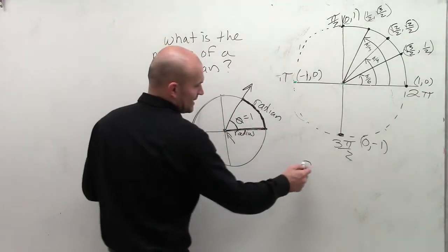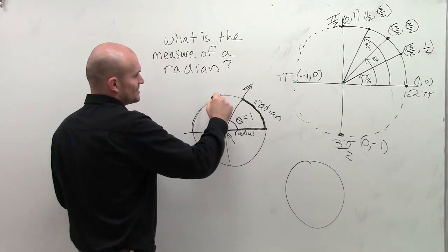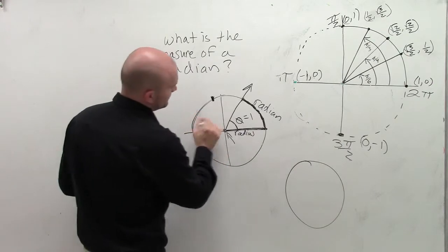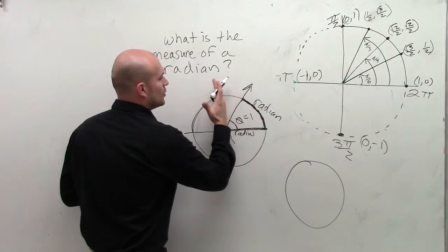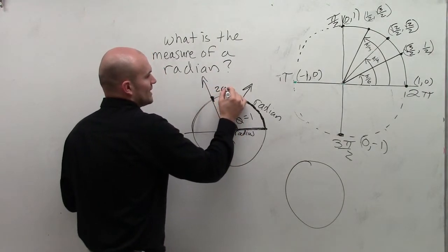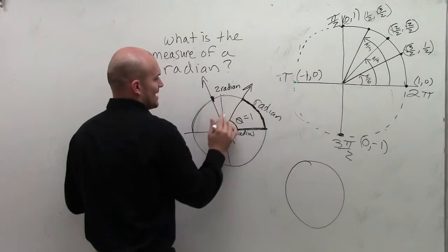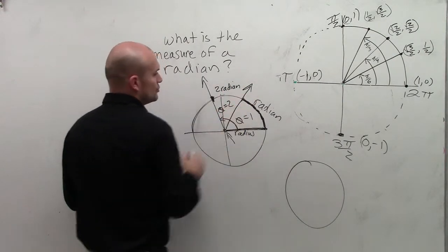If I want to find two radians, well, if here's one radian, we could say two radians. It's going to be roughly like there. So two radians, I would just rotate my angle a little bit farther, and I'd get to this point, which now would be two radians. Or we could say that from here to here, theta equals two radians.